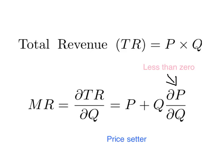The thought experiment for the monopoly is: I could sell less at a higher price, or I can sell more at a lower price. When I sell more at a lower price, I get the price on those extra units, but I'm giving up the higher price I could have charged on fewer units. So marginal revenue is the price minus the reduction in inframarginal revenue.